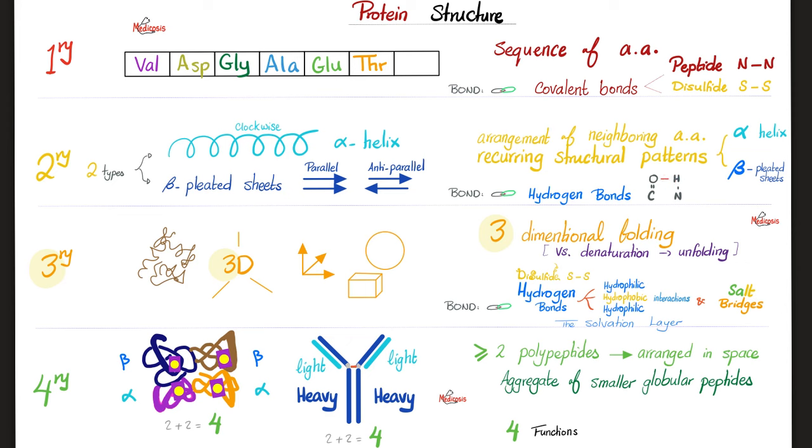Tertiary 3D structure depends on three things: hydrogen bond, hydrophilic outside, hydrophilic inside, hydrophobic in the center. Disulfide bonds and the salt bridges. Fourth, quaternary structure. 2 plus 2 is 4. 2 alpha and 2 beta of hemoglobin. 2 light and 2 heavy chains of the immunoglobulin. And it serves four functions.